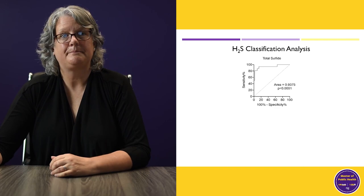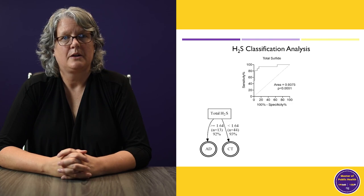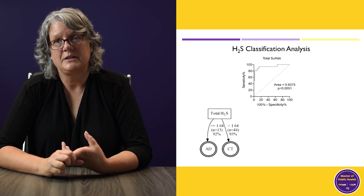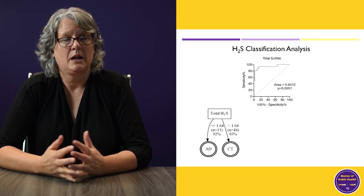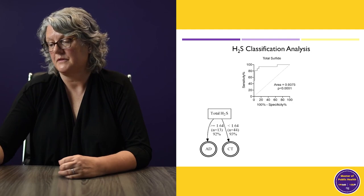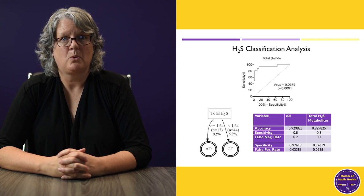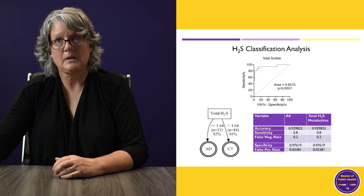We also analyzed the most important variables for discriminating between Alzheimer's disease and not, since we had various MRI measures and different types of hydrogen sulfide. Total hydrogen sulfide by itself was enough to discriminate about 92 to 93% of the people. We have a cutoff of 1.64 millimolar — once you get above that, that's when cognitive deficits begin. Our sensitivity for detecting people who actually had the disease was 0.80, and our specificity — how well we left out people without the disease — was almost 98%. Quite good for a single marker.